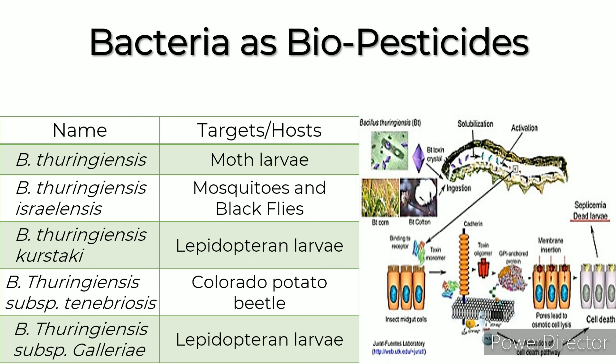Bacteria as biopesticides: Bacillus thuringiensis targets moth larvae; Bacillus thuringiensis israelensis targets mosquitoes and black flies; Bacillus thuringiensis kurstaki targets lepidopteran larvae; Bacillus thuringiensis subspecies tenebrionis targets Colorado potato beetle; and Bacillus thuringiensis subspecies galleriae targets lepidopteran larvae.